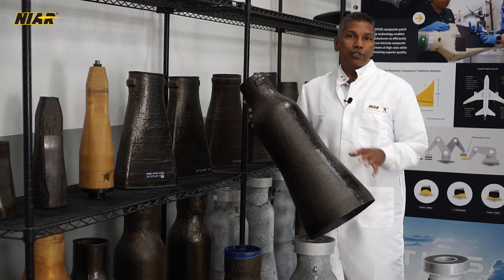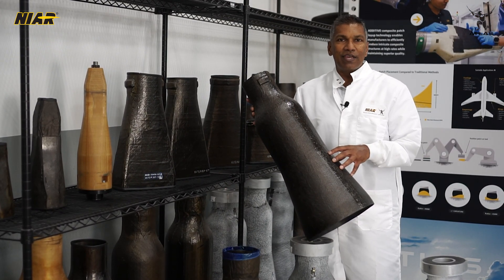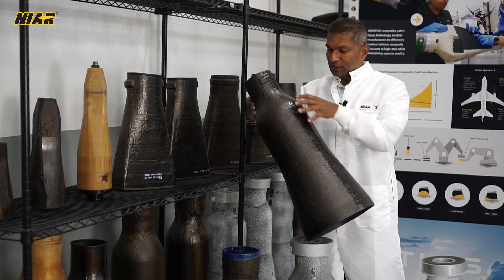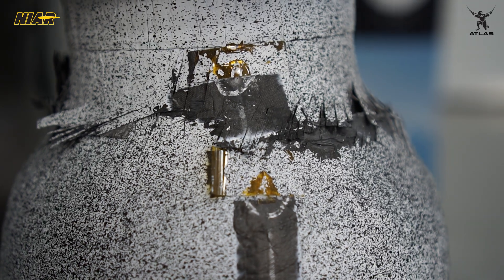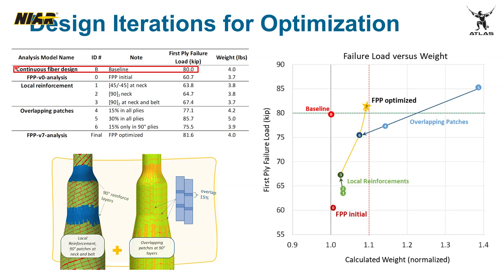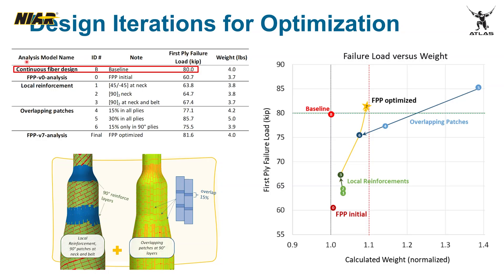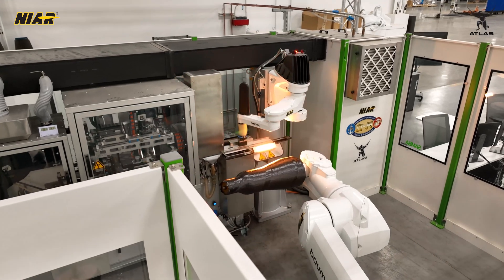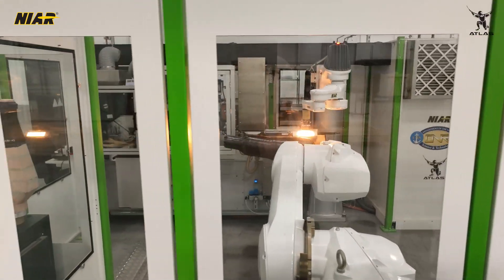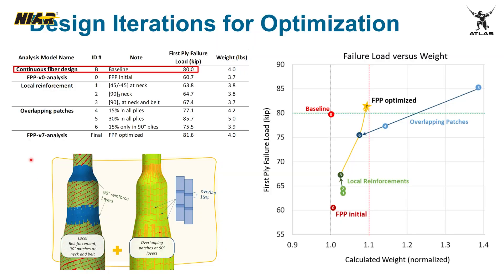Next, we are going to show you the findings from a case study conducted at NAR Atlas for the design, optimization, and manufacturing of a conical cylinder that has a neck region, which is typically very challenging for automated fiber placement technique. We used the predicted strength of a flawless continuous fiber part as the baseline and as the target strength for designing the optimized FPP component. To enhance performance, we ran multiple design iterations and validation exercises, strategically adding fiber patches to the cylinder's neck and belt regions.